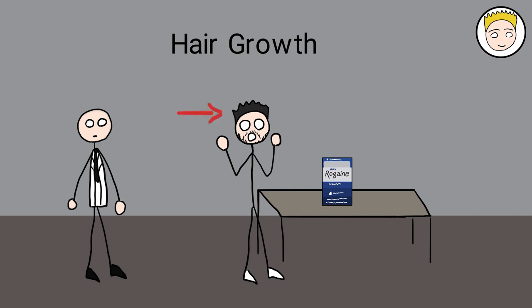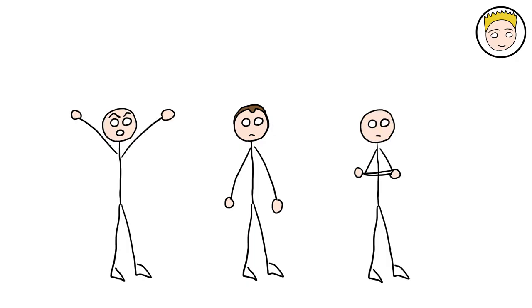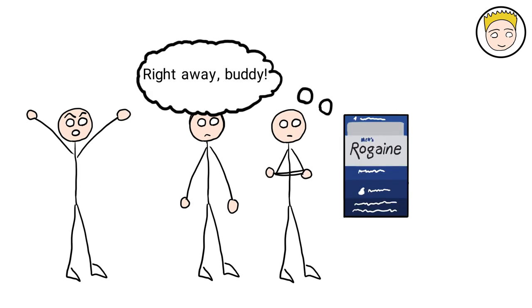But it wasn't exclusive to the patient's heads. Instead, hair began springing out of patients' backs, arms, and legs. As baldness and premature baldness affect millions of men and women around the world, this accidental discovery quickly gained the attention of those in charge.